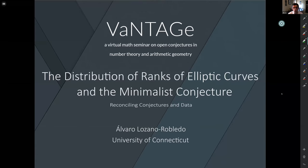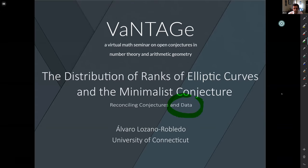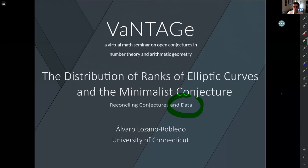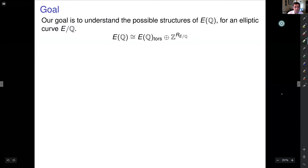There have already been two wonderful talks by Poonin and Elkes on ranks of elliptic curves, and I highly recommend you watch those if you haven't yet — they were awesome. What I would like to do today is supplement what they did by talking about data. I would like to give you a tour of the data available to us and what it says about conjectures and the distribution of ranks.